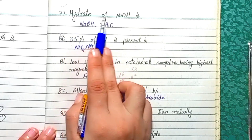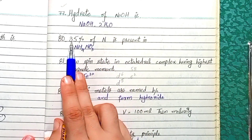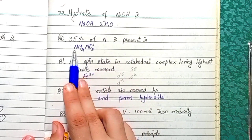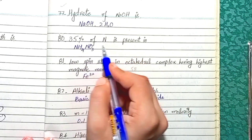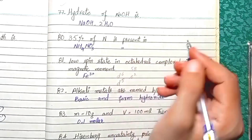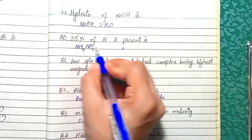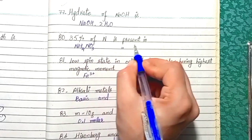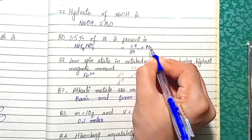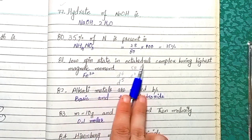Question 77: Sodium hydroxide is always dehydrated. Question 80: 35% of nitrogen is present in ammonium nitrate. To find the percentage of nitrogen in ammonium nitrate: nitrogen has 2 atoms, each with atomic mass 14, giving 28. The molecular mass of ammonium nitrate is 80. So (28/80) × 100 = 35%.